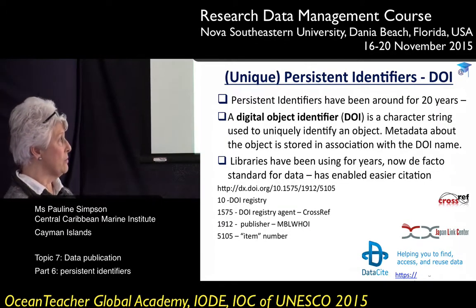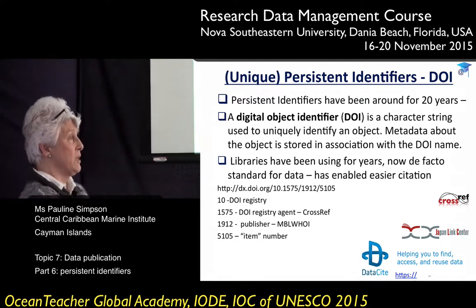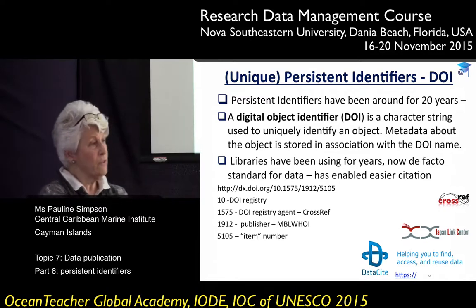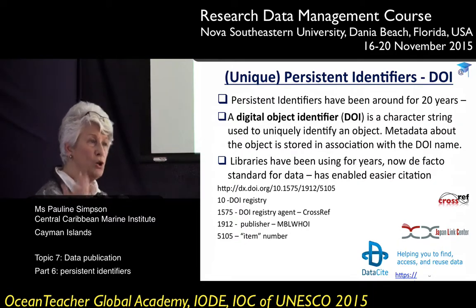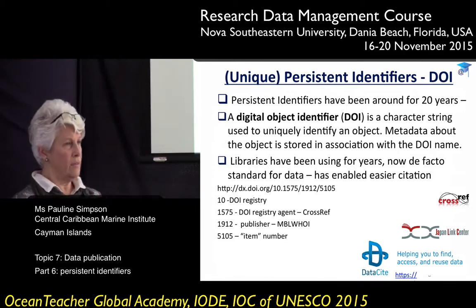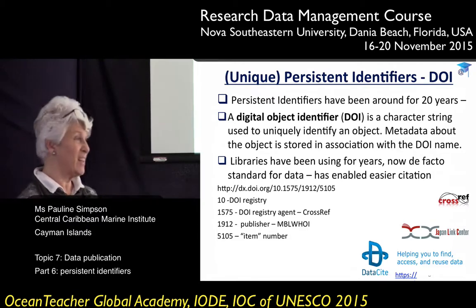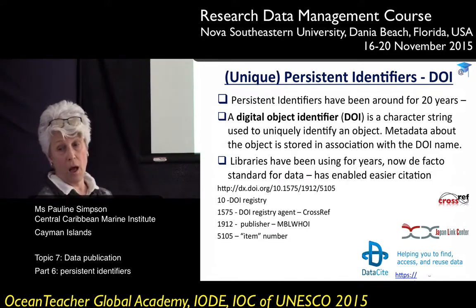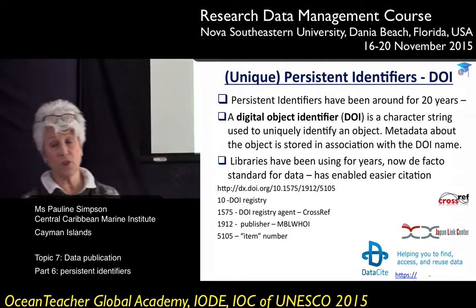Both Force 11 and the RDA require that within data citations there are persistent identifiers — unique ones. The most obvious is the digital object identifier. Persistent identifiers have been around for a long time: ISBNs for books, ISSNs for serial titles. That kind of thinking predates DOIs, which are a relatively new introduction. DOIs are character strings used to uniquely identify an object.